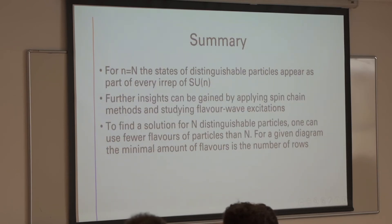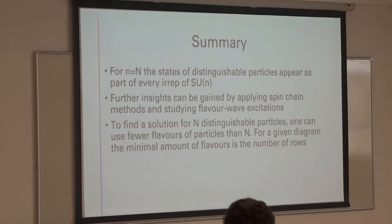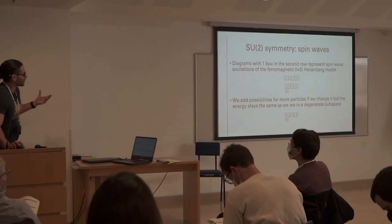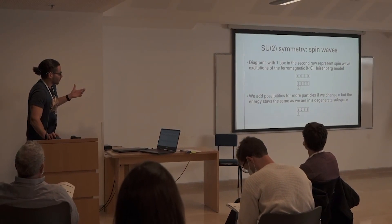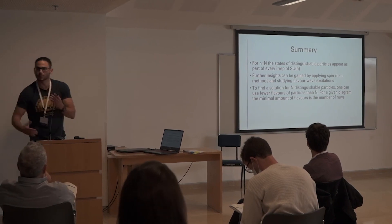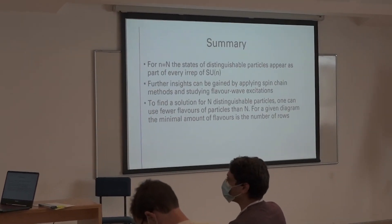In summary: if the number of particles equals the number of sites, we get states that break a global SU(N) symmetry where all particles are different. Because this system is very similar to spin chain models, thorough studies can be done using methods from spin wave models. I used fewer particles than I could have — there are only two rows here — and it's a general result that for any given diagram one can use a minimal number of particles equal to the number of rows of that diagram.